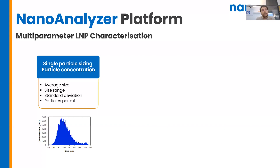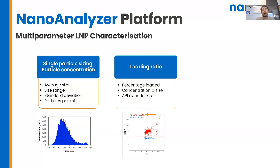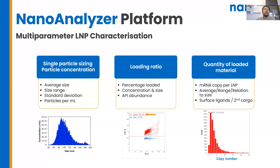We're analyzing thousands of particles in a single minute runtime, allowing us to create nice size distribution histograms and get all the average sizing data and concentration as well. We use these nucleic acid dyes to identify the particles which carry our RNA, and we can begin to quantify this in terms of mRNA copies per LMP.